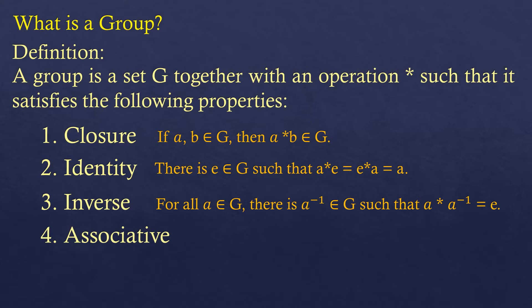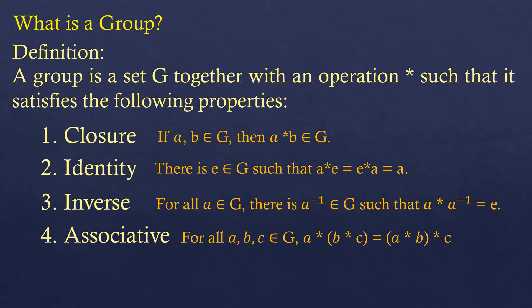Another property is the associative property: for all A, B, C in G, A star (B star C) equals (A star B) star C. Meaning if you regroup the elements with the binary operation — applying B star C first versus applying A star B first — the result is the same regardless of grouping.